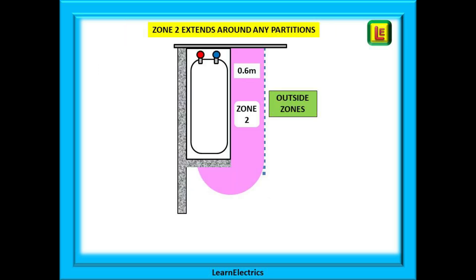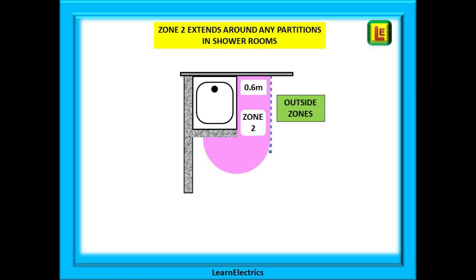Looking at an overhead view of a bathroom, we can see that Zone 2 travels parallel to the edge of the bath and then at the corner of the bath it wraps itself around the partition. Everything beyond is classed as outside the zones. A shower with a footbasin follows exactly the same rules as the bathroom — Zone 2 is 0.6 metres from the edge of the footbasin and then wraps itself around the fixed partition of the shower.